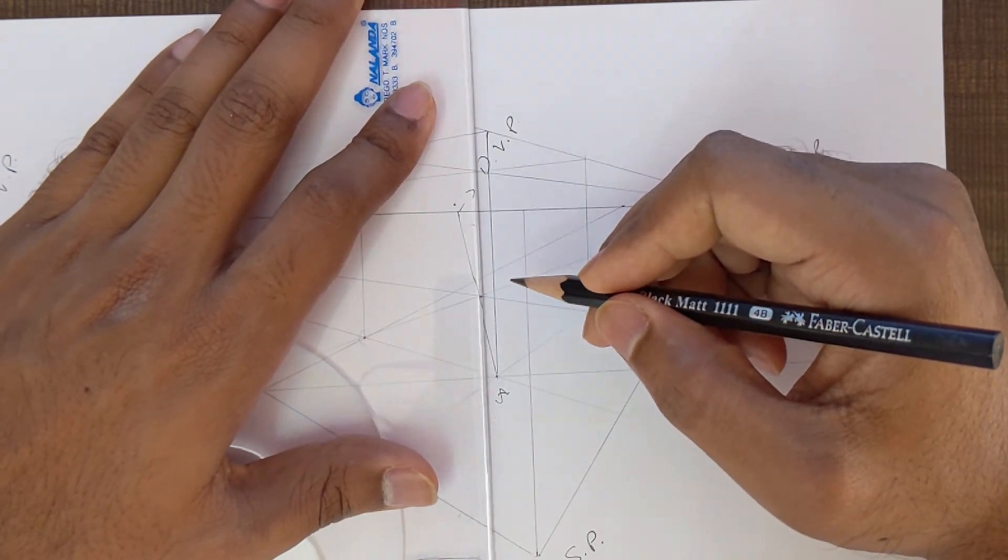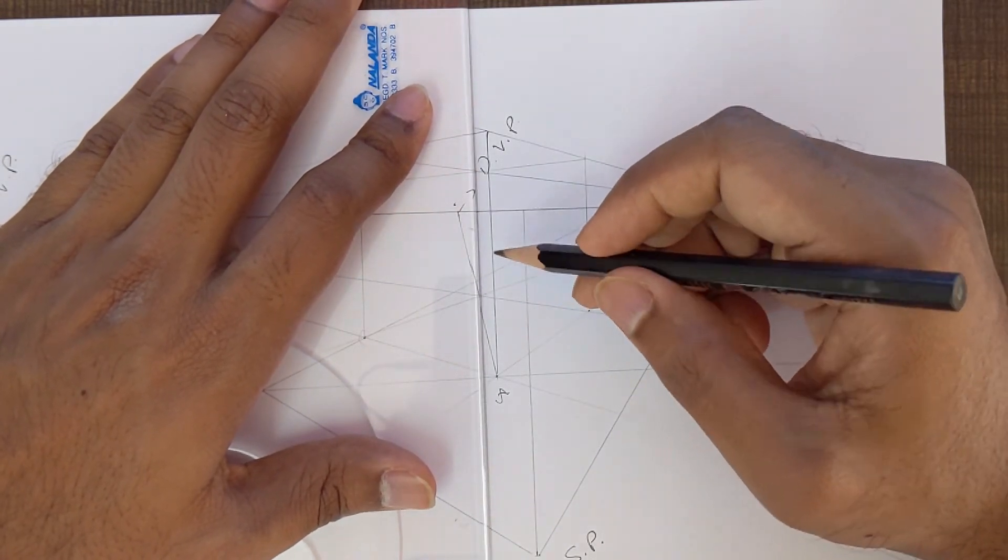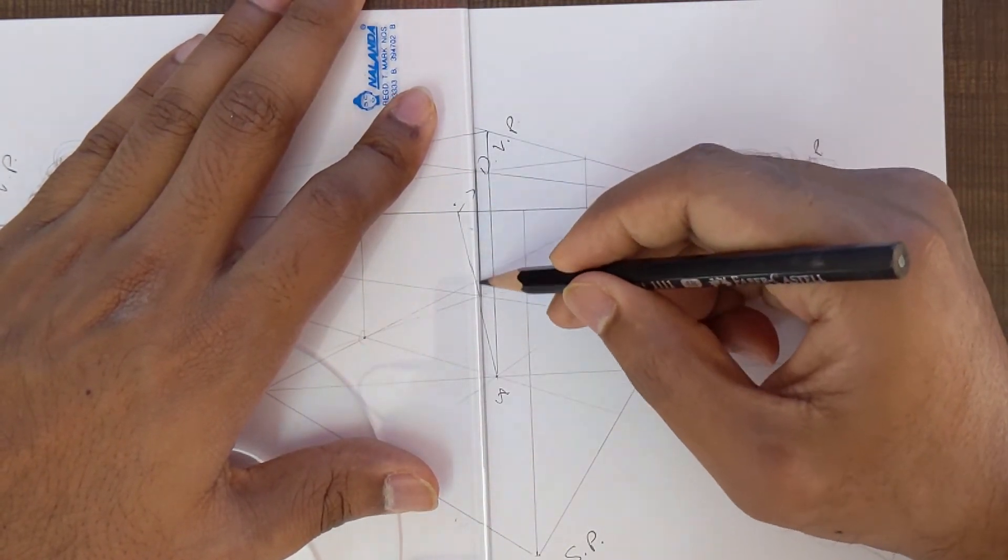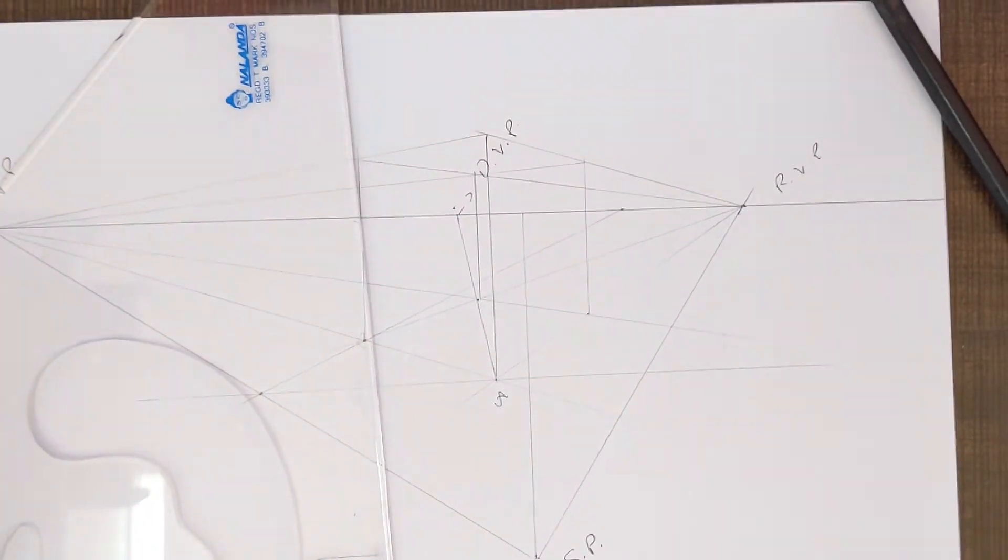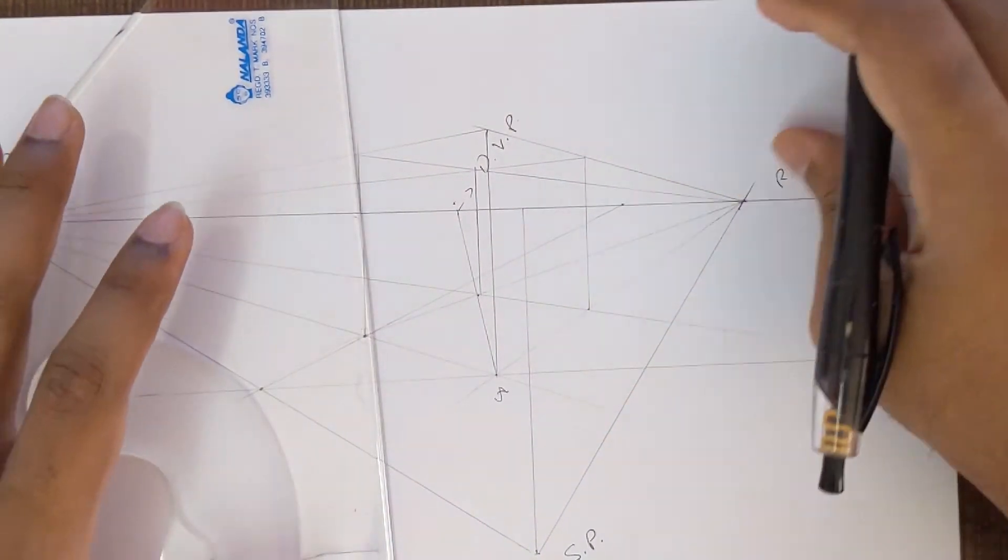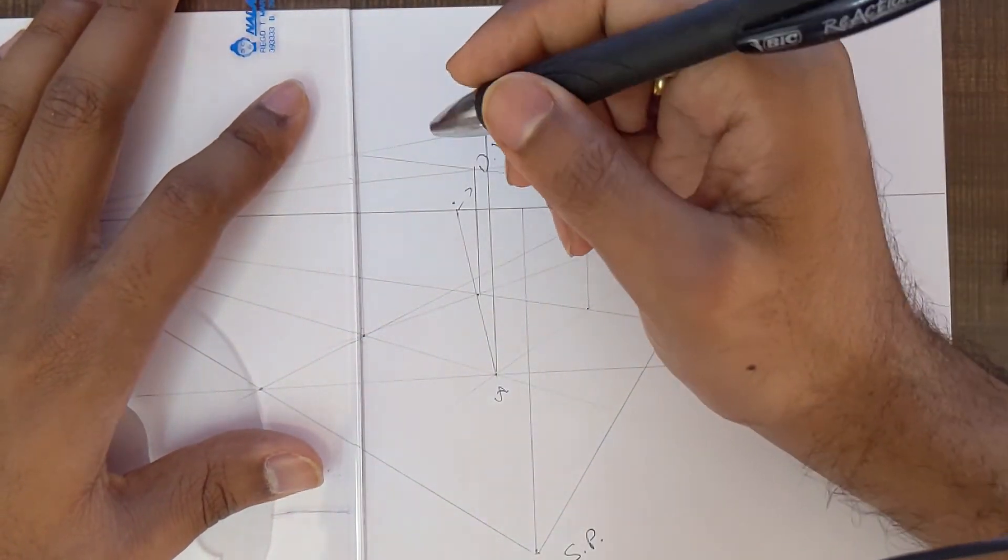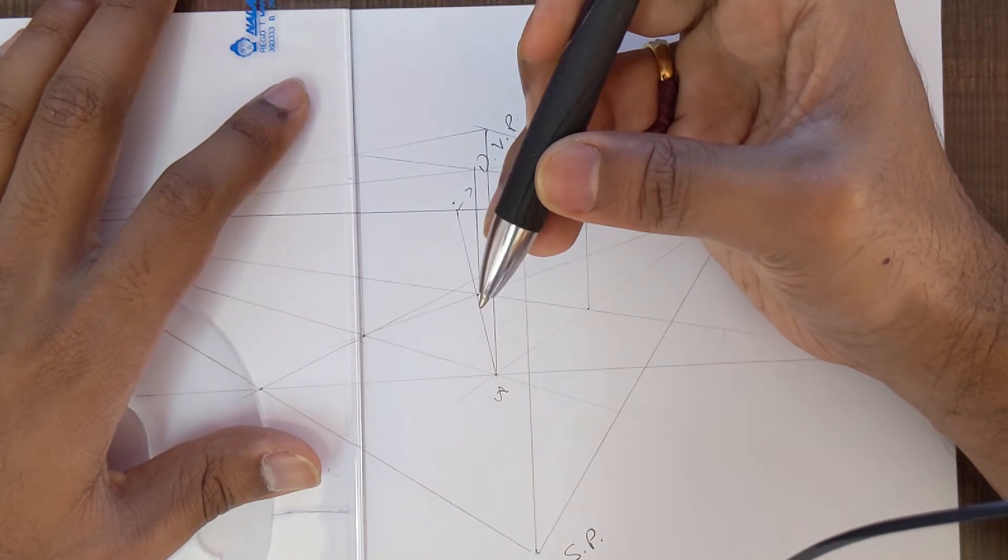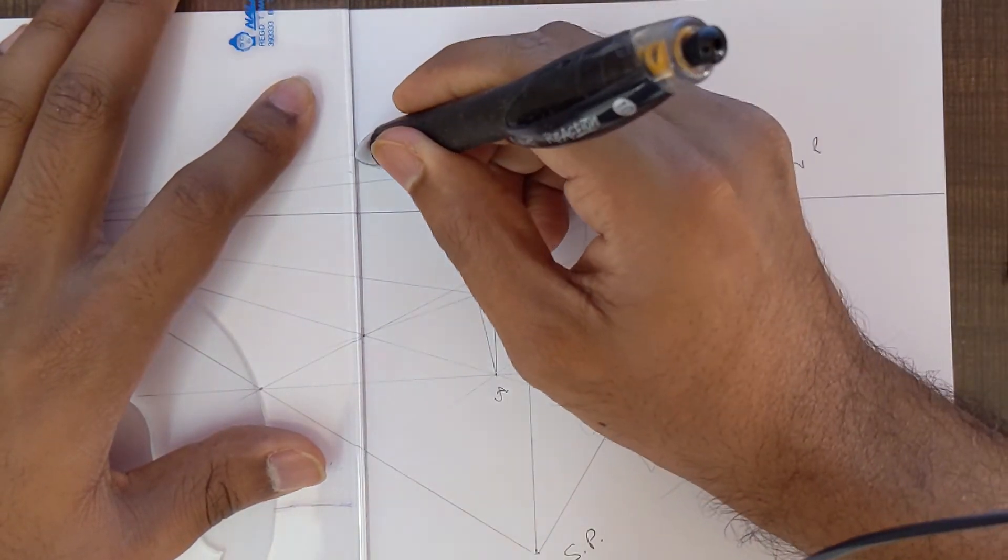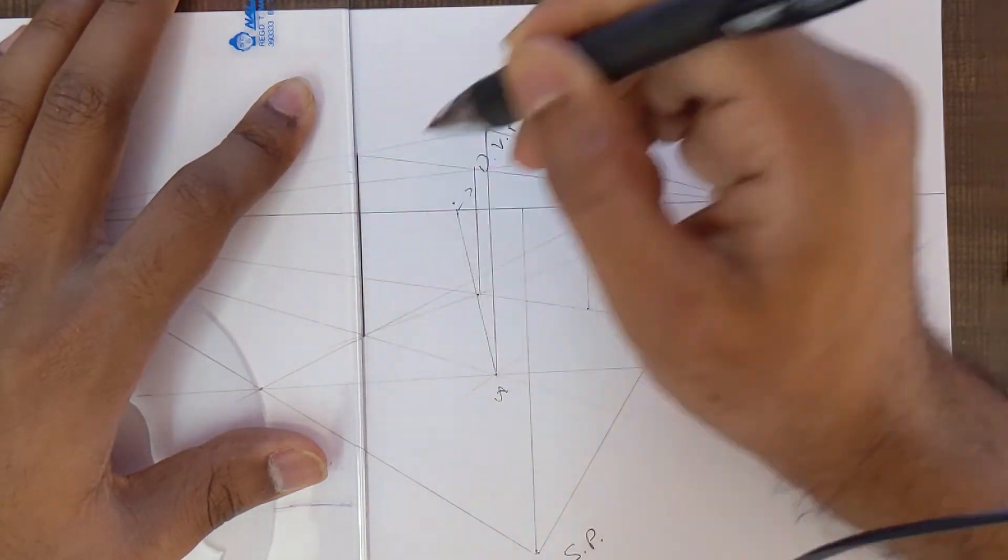And just complete the square. That's it. By doing so, we have a perfect cube in two-point perspective. I'll just darken this bit over here.